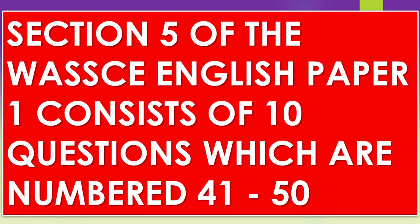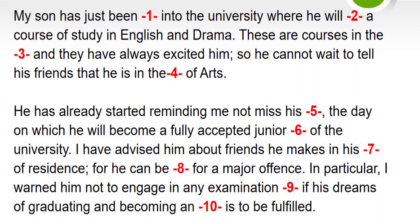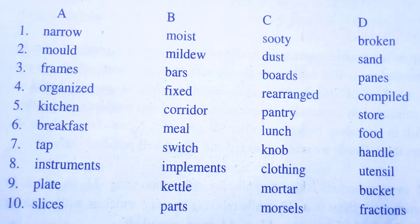Section 5 of the WAEC English Paper 1 consists of 10 questions, which are numbered 41 to 50. Here, candidates are provided a passage with gaps. The gaps indicate missing words. Against each number in the list below the passage, four choices are offered in columns, letter A to D, and candidates are expected to choose from the options provided the word that is most suitable to fill the gap.